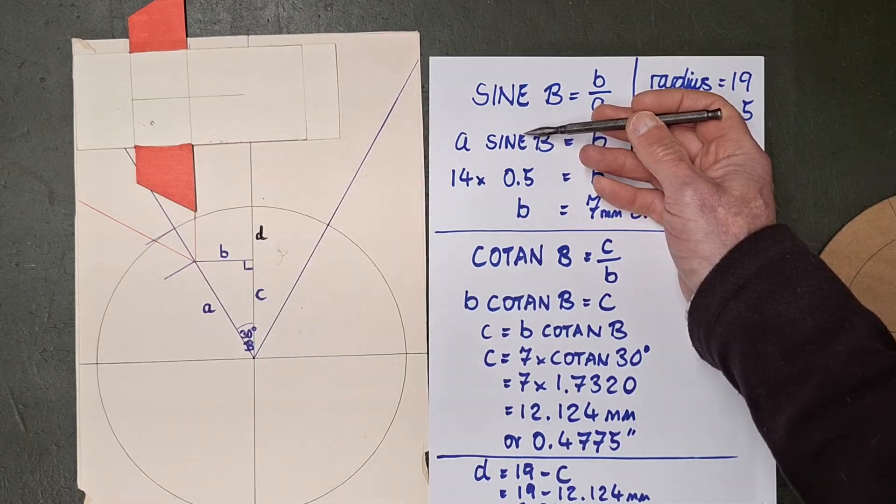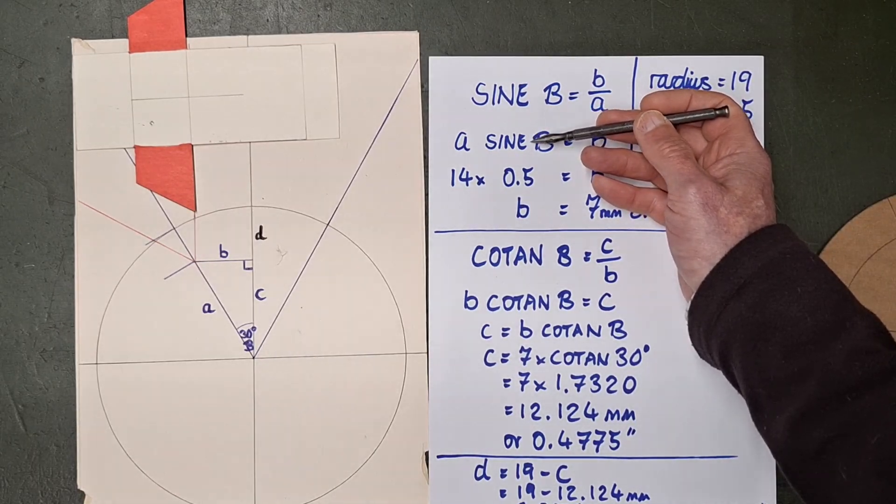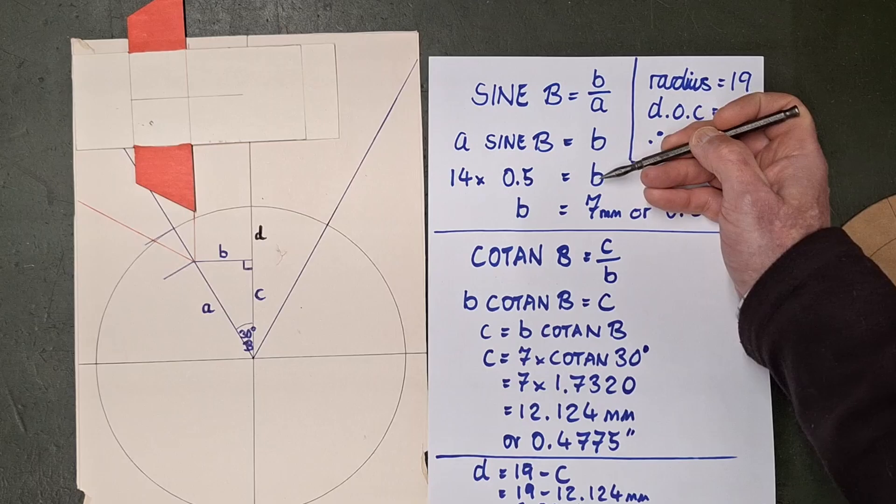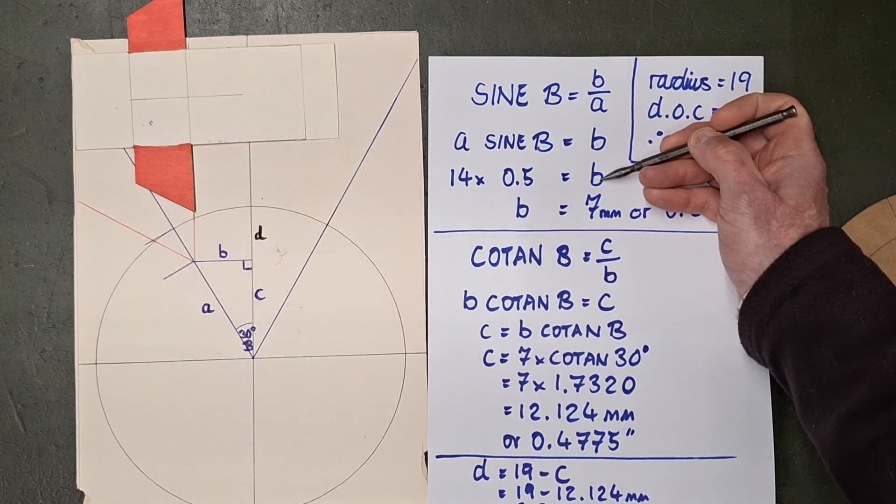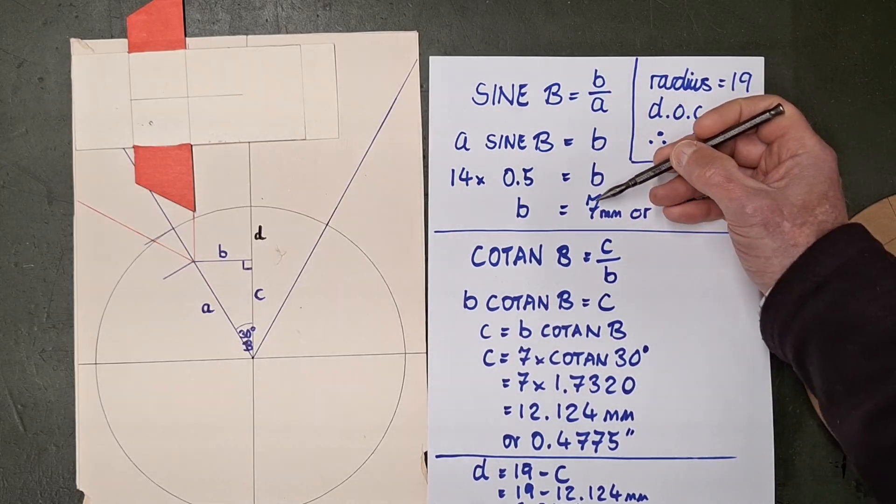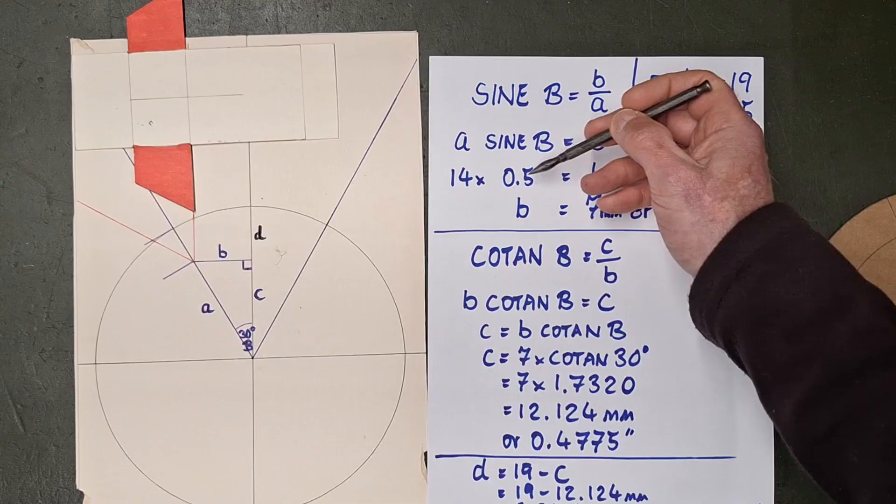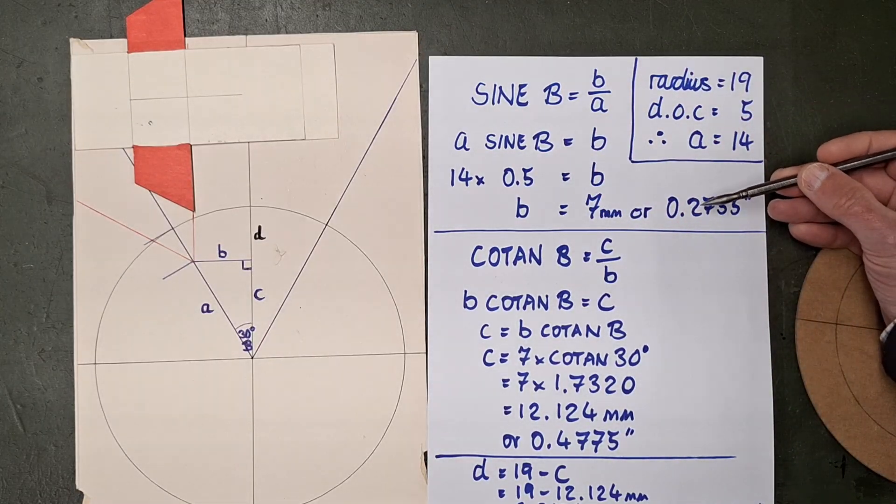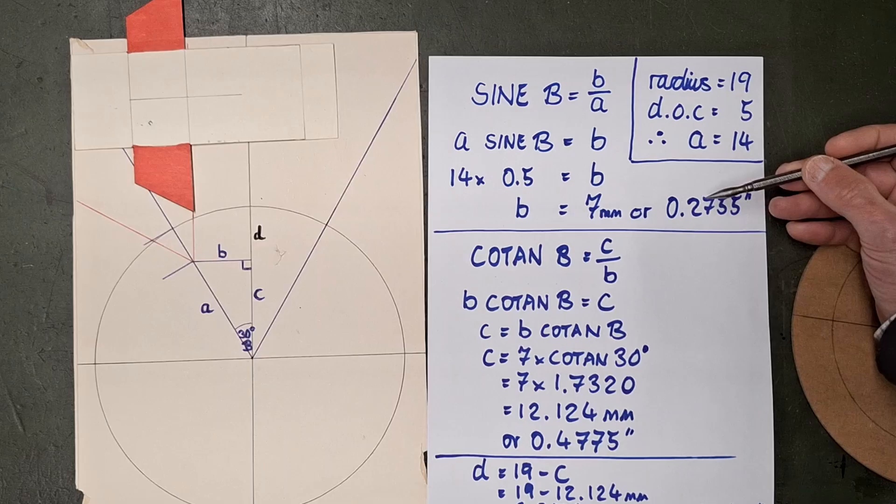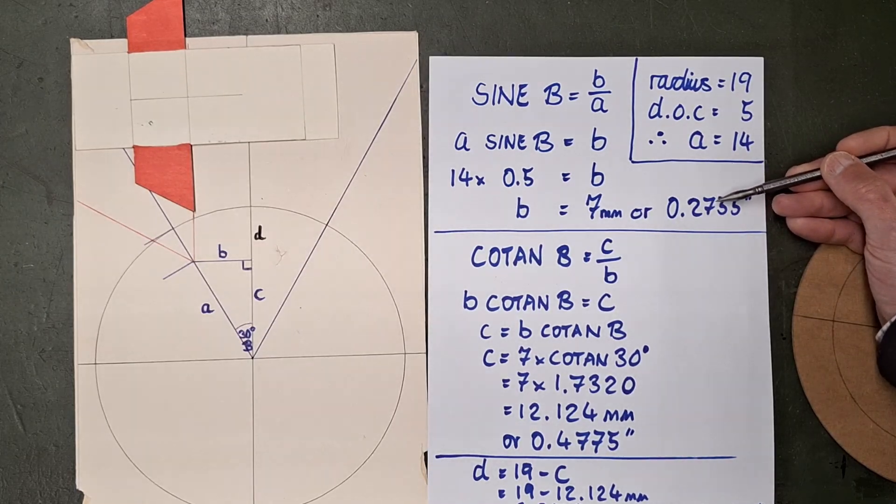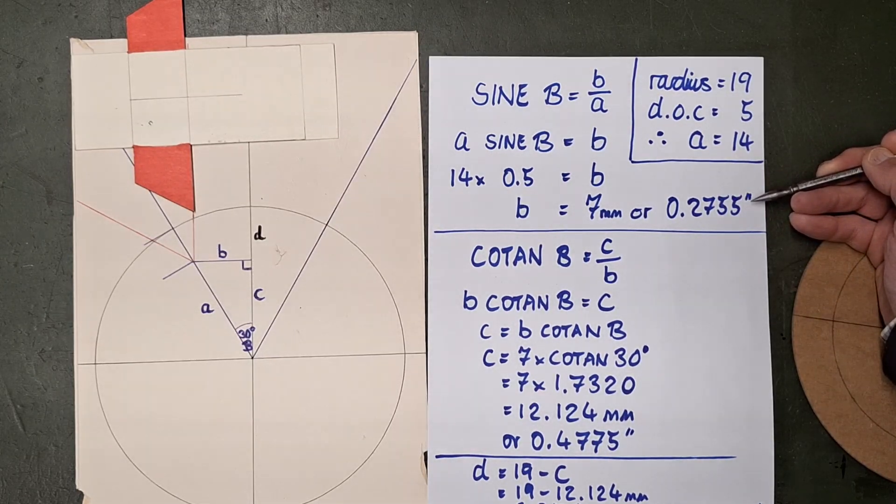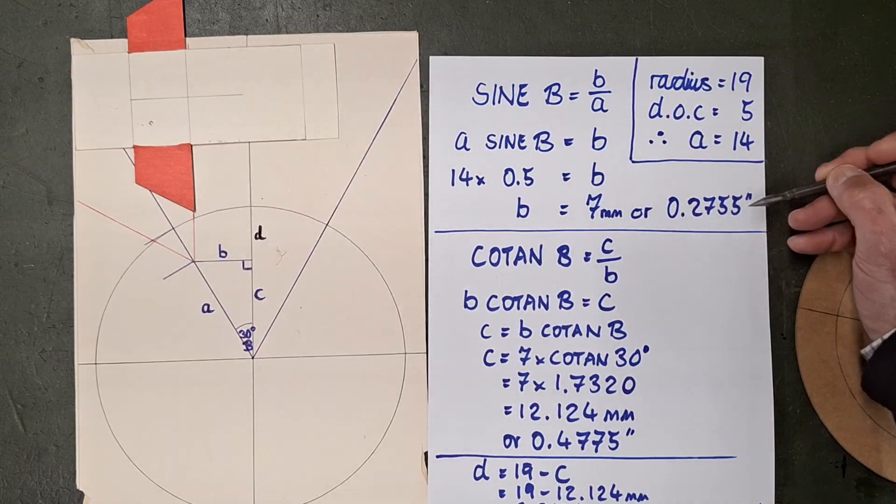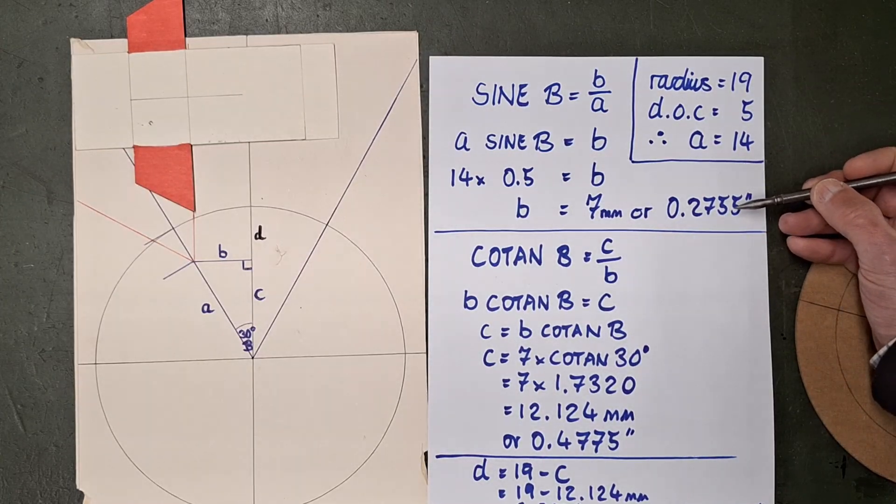So we've said that A is 14. So 14 times a half, which is, when you look it up in your table, the sine of 30 degrees. That will give you the dimension B. So B is equal to 14 times 0.5, so a 7 millimeter depth of cut, which if you divide it by 25.4 is 0.2755 of an inch, which is what I'll be using because my machine is imperial.